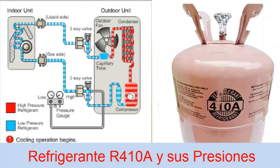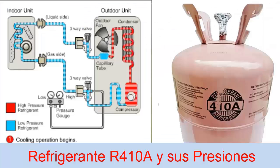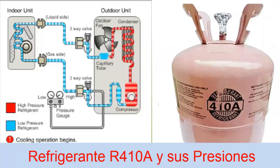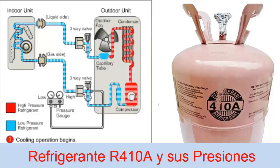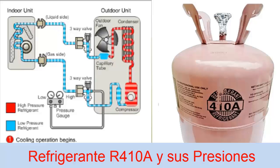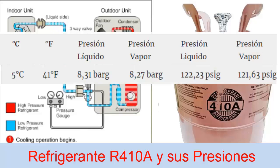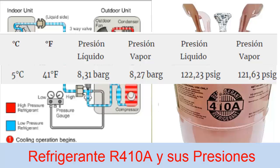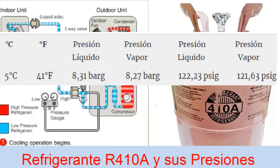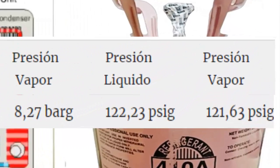In these equipment, the work temperature in the evaporator is about 5 degrees Celsius, about 41 degrees Fahrenheit. For this temperature value, the pressure in the evaporator that must mark the low pressure gauge with the equipment on is about 8.27 bar, or its equivalent of 121.63 psi — that would be the low side.